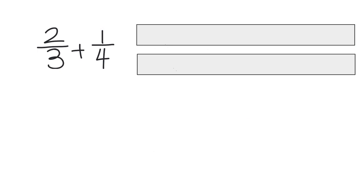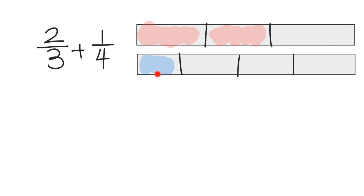So to add two-thirds plus one-fourth, first thing we're going to do is take these two tape diagrams — each of these represents one whole — and draw two-thirds and one-fourth. So two-thirds is going to look something like that, and one-fourth is going to look something like that. Let's do a little shading so that we can be clear. There's two-thirds, and there's one-fourth.